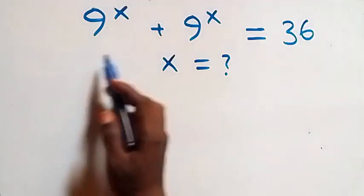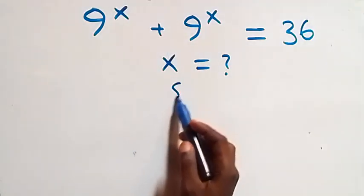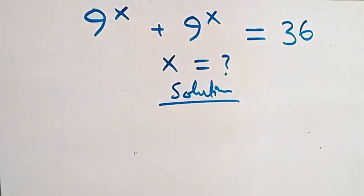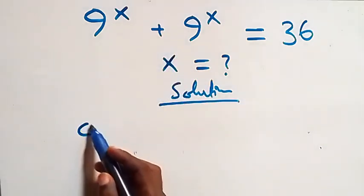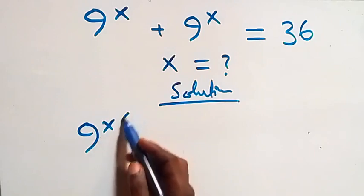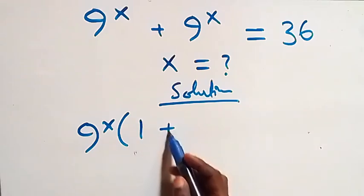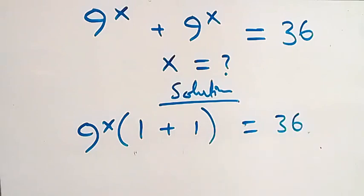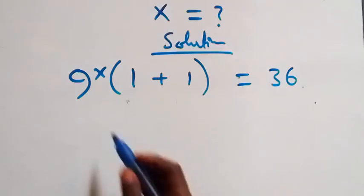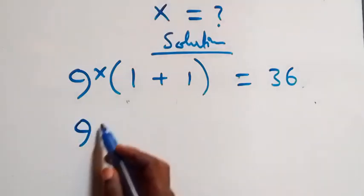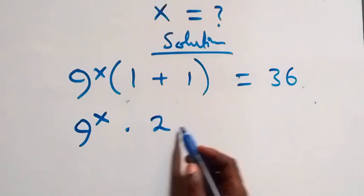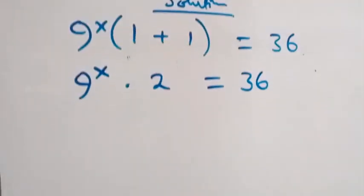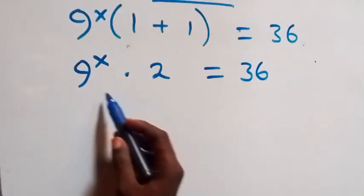Hello, you're welcome. Here's how to solve this nice exponential equation. From what we have here, we can factor 9 to the power x out, then what we have inside becomes 1 plus 1, which equals 2. So this becomes 9 to the power x times 2, which equals 36.